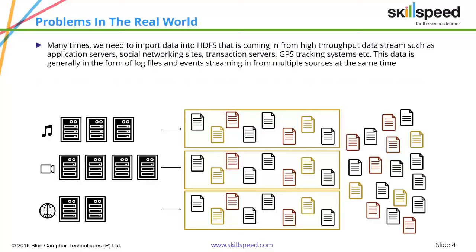The second method most people think about is writing a script — a script which will automatically collect log data every now and then and copy it into the local system. However, managing scripts is very difficult, especially when you have hundreds of applications or web servers. The problem is that the data is not constant; it keeps generating every second or every millisecond, which is why we call it streaming data. We need an effective system that can transfer the data as and when it is generated, without losing it, into Hadoop as a flow.